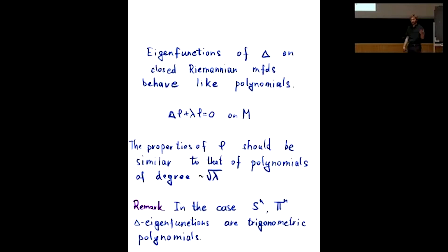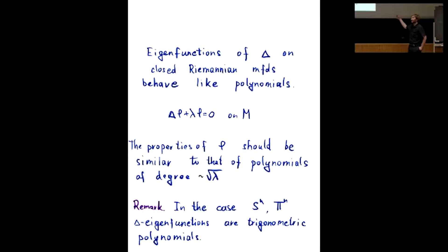Here is a philosophical point: the eigenfunctions should behave like polynomials. The analogy between the degree of the polynomial and the eigenvalue is that the degree is roughly the square root of the eigenvalue. It's not clear how to work with solutions to this PDE — it's something very non-explicit — and I will tell you later about some techniques that help study quantitative properties of solutions, like the number of zero curves.